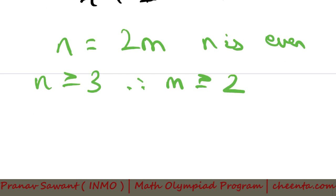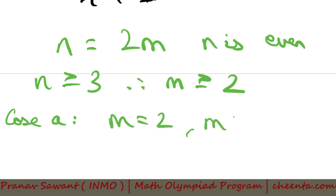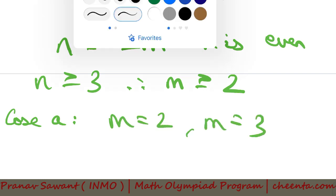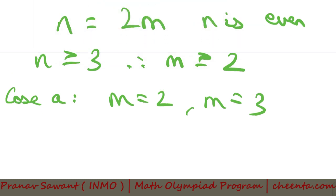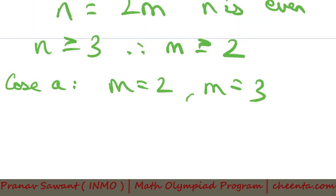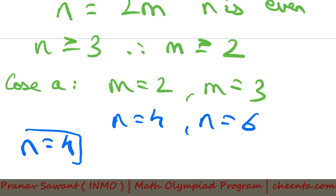I'm going to split this up into two cases, Case A and Case B. In Case A, we consider where m = 2 and m = 3. In Case B, we consider the scenario where m ≥ 4. Now at m = 2 and m = 3, we can see that n will be 4 and n will be 6. You can check that n = 4 actually satisfies the condition, and n = 6 does not satisfy.